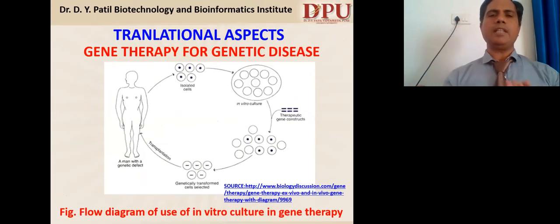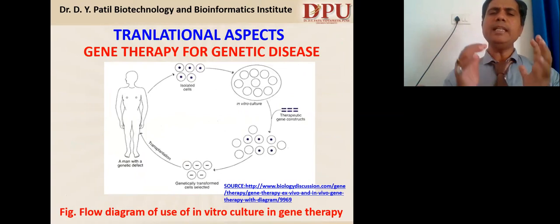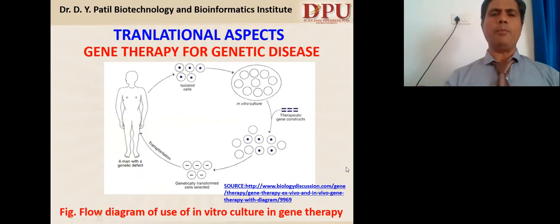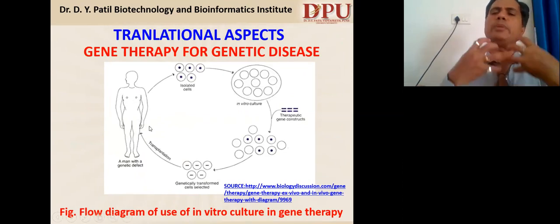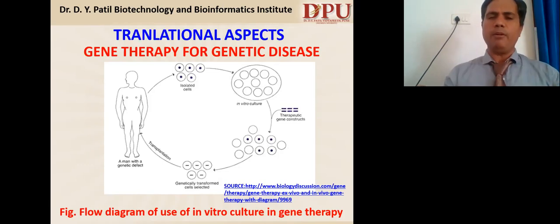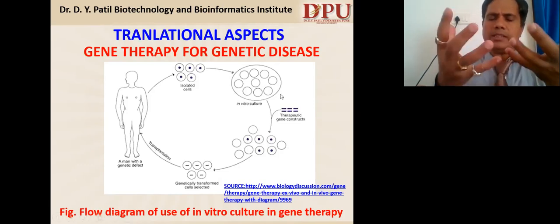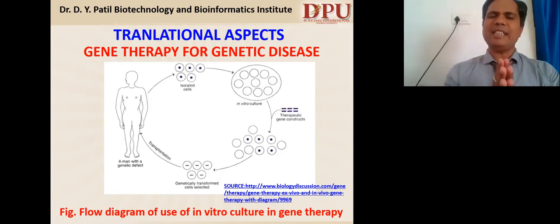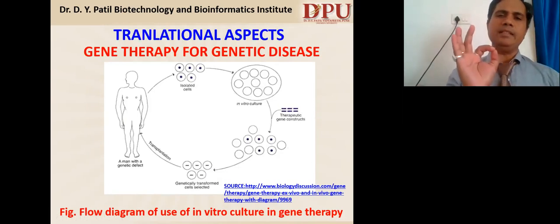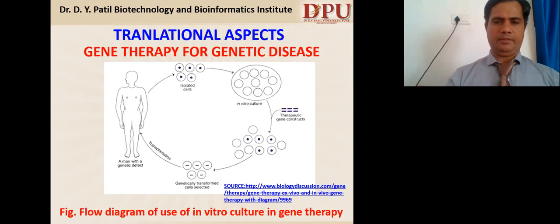The last important aspect is the use of animal tissue culture for gene therapy for incurable genetic diseases. In this human genetic disease model, cells are isolated and cultured by animal tissue culture, and these grown cells provide the first step towards testing gene therapy as a treatment option.